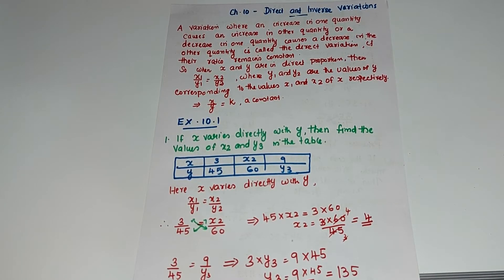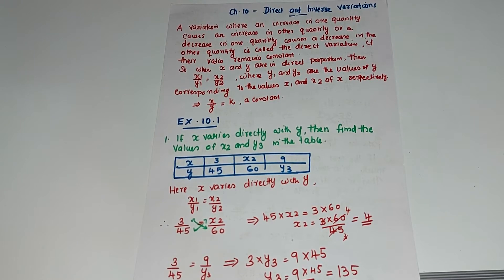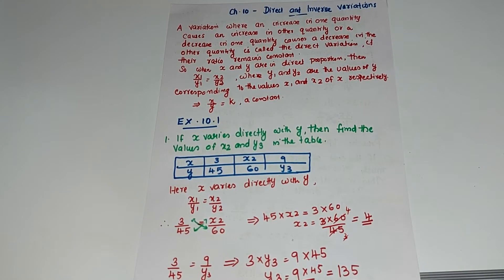Now we will go to exercise 10.1. If x varies directly with y, find the values of x2 and y3 in the table. We have a table where x and y are in direct variation. x1 and y1 are given, x2 is not given, y2 is given, x3 is given, and y3 is not given.